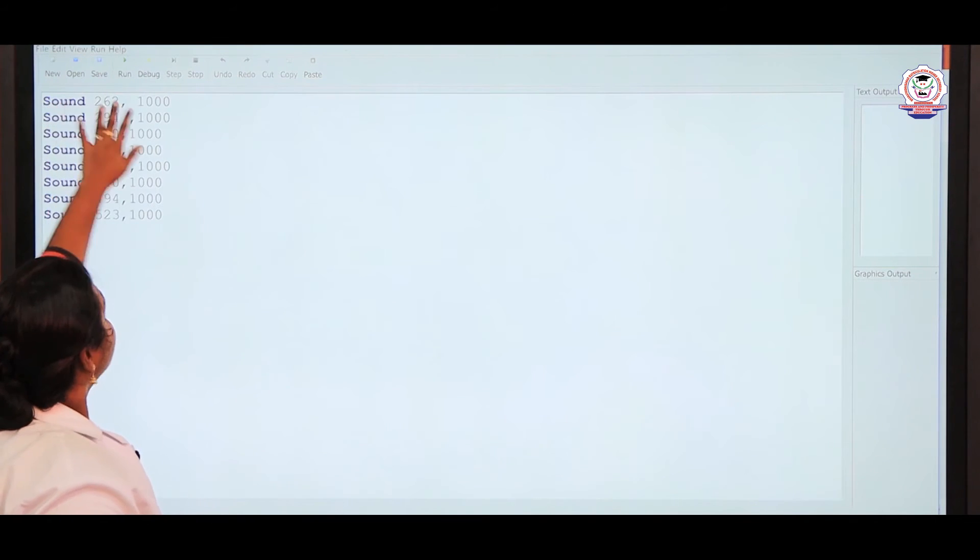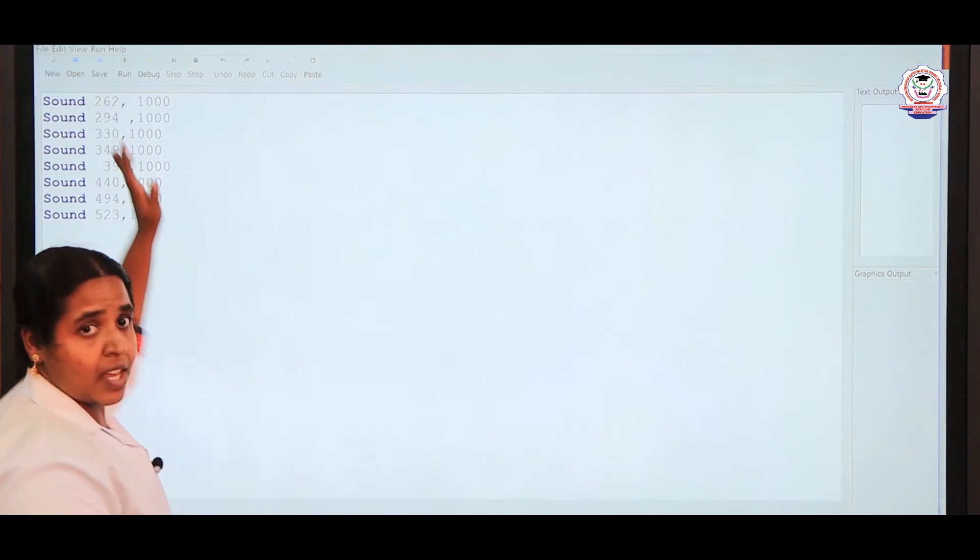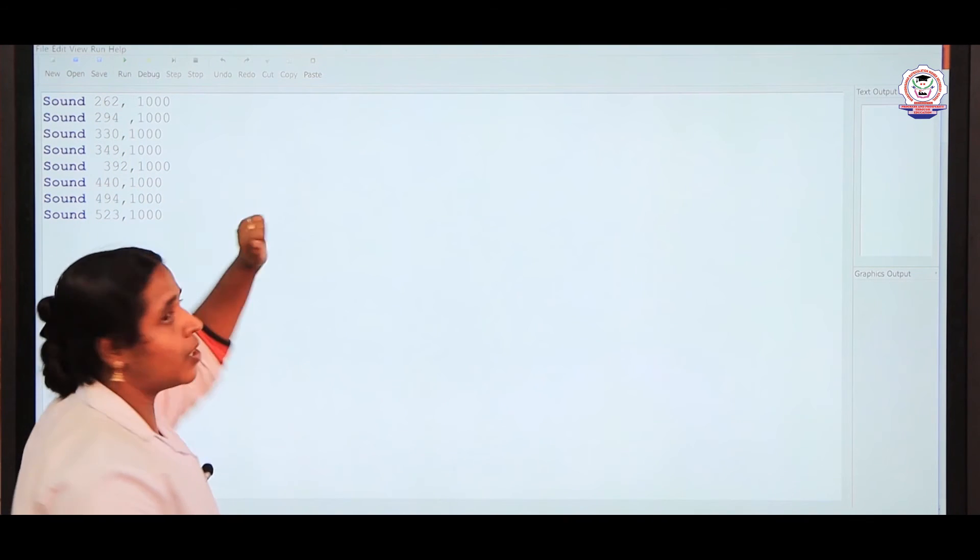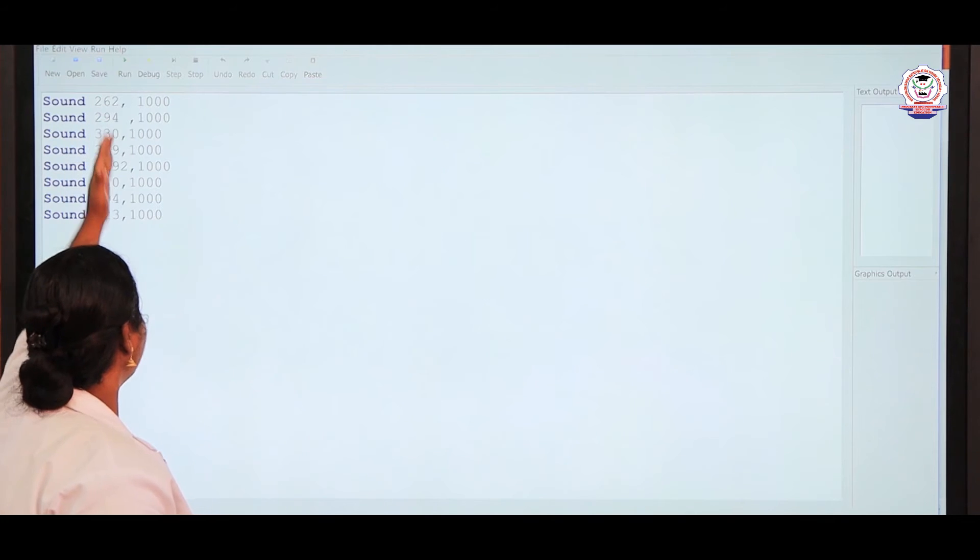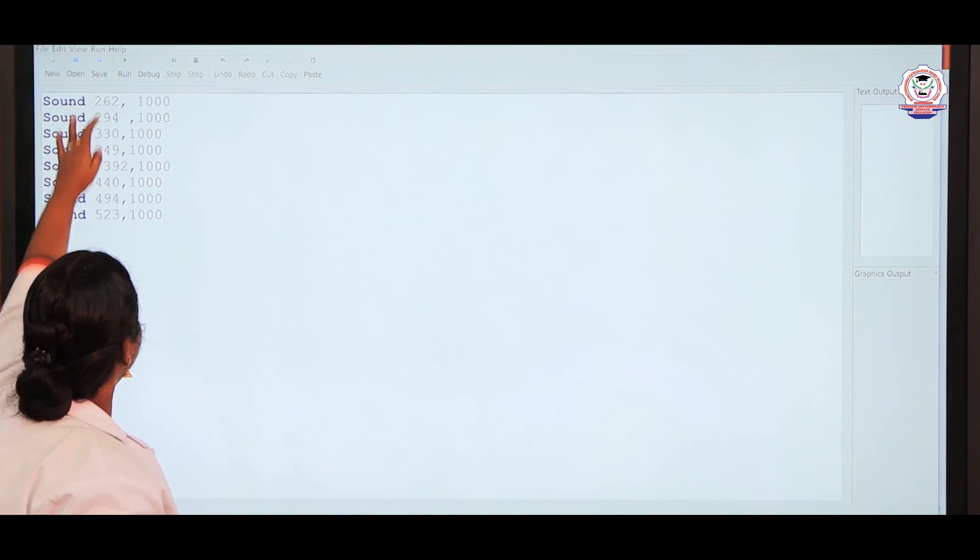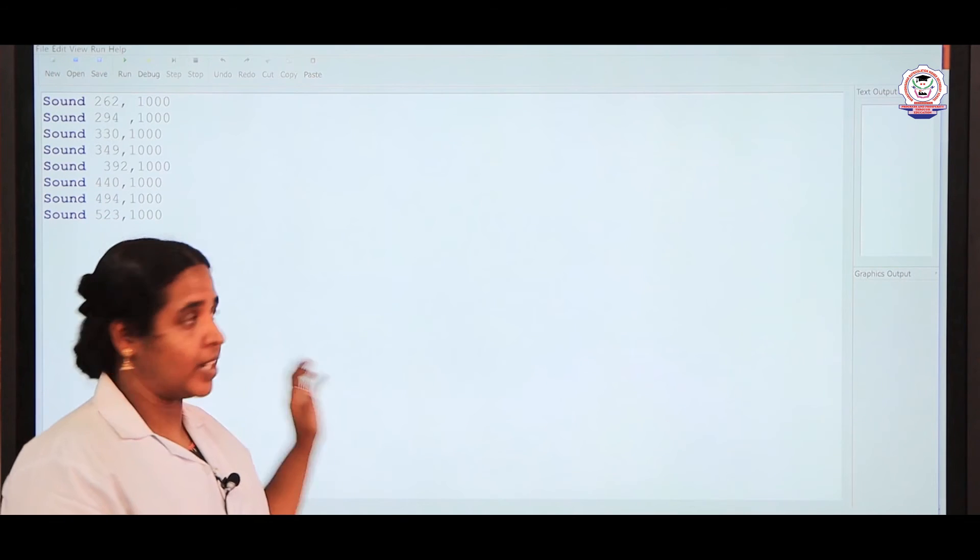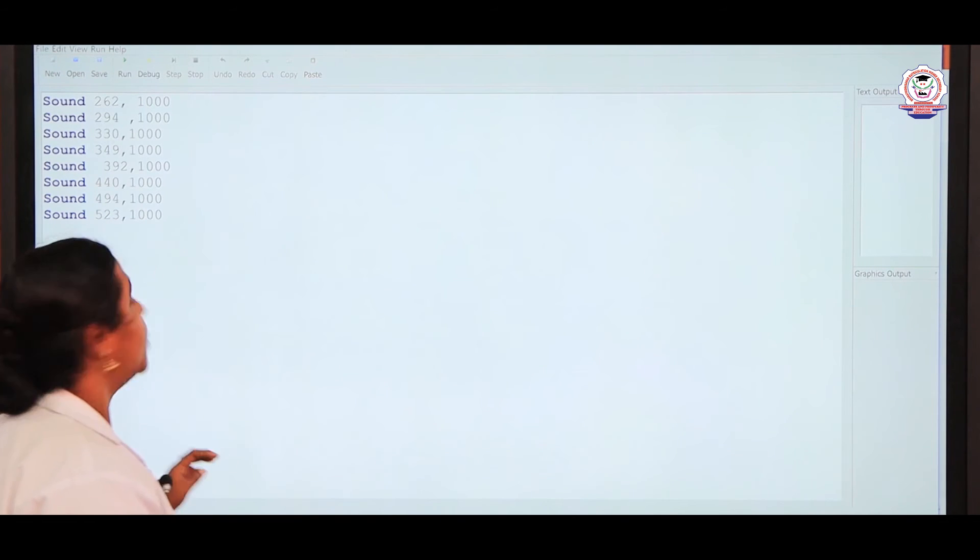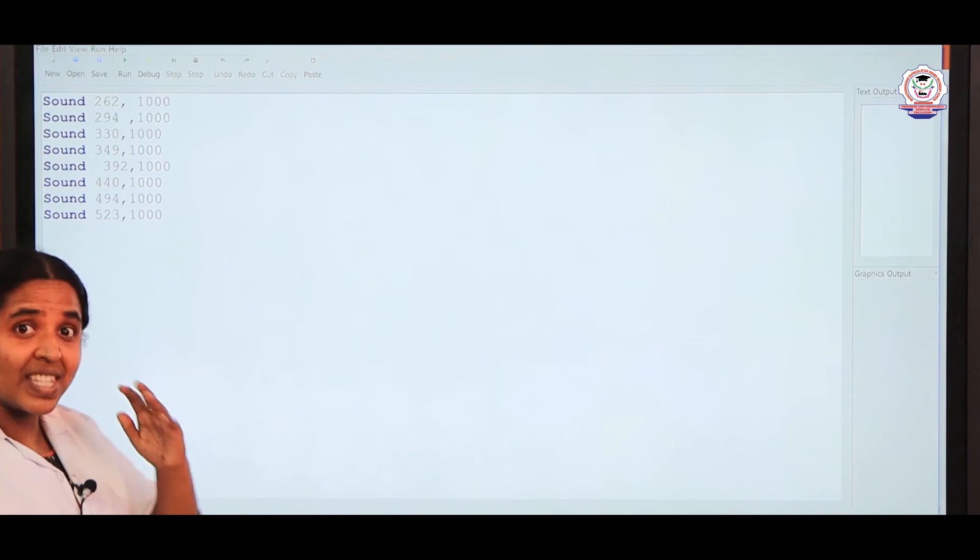See here I am using 'sound'. This is the frequency of the sound and duration of the sound. I am using only one second for all sounds. Then I am changing the frequency ranges only. Now I am going to execute the program. So listen carefully.